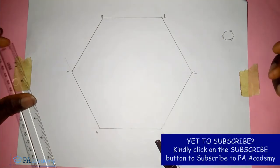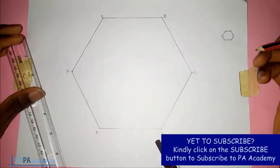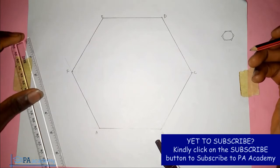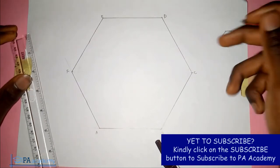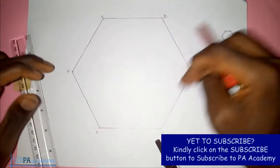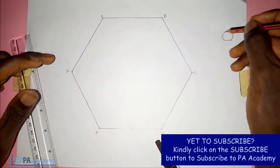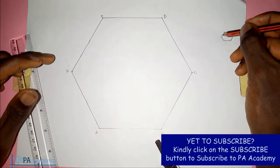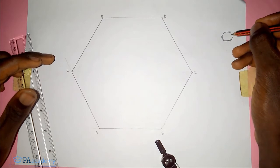Hello and welcome to PA Academy. In this video I'm going to be showing you how to inscribe a circle inside a hexagon. The hexagon is a polygon with six sides. We are going to have a circle inside the hexagon such that the circle will touch all the six sides.